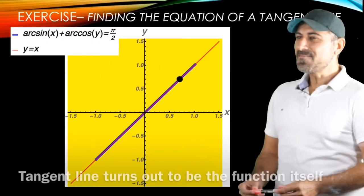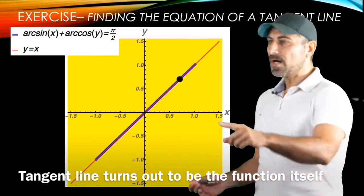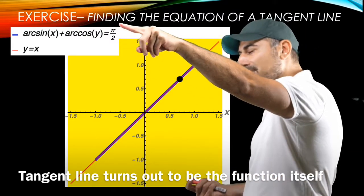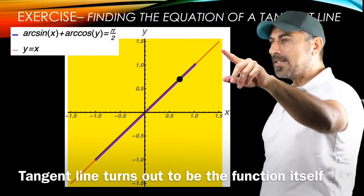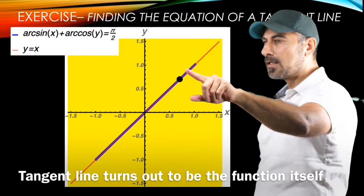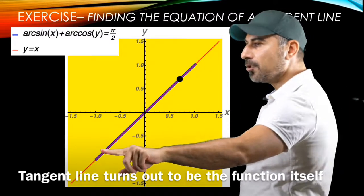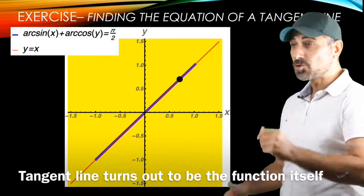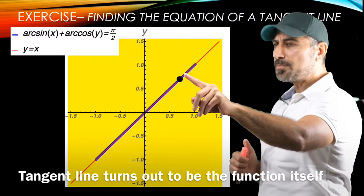All right, if you look at the graphical outlook of this implicit expression here, and if you want to graph that, as you see, this is the blue line. Blue line is the graph of arc sine x plus arc cosine y equals pi over 2, and turns out to be a line.